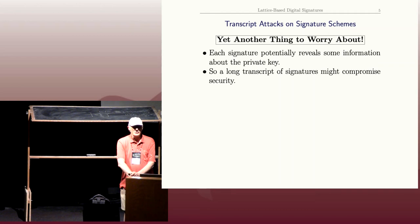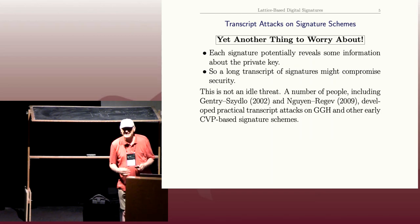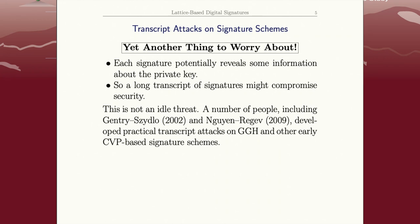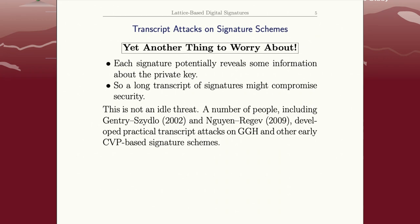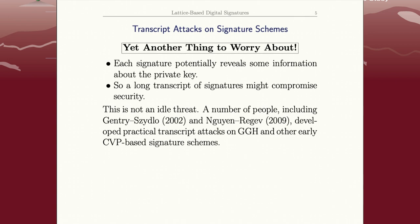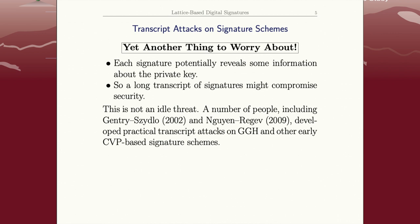The issue is a long transcript—people call it a transcript, just a list of signatures—might leak information of some sort. And this is not at all an idle threat. Gentry and Sidlow in the early 2000s, and Wynn and Regev later in the 2000s, showed that many of the lattice-based digital signature schemes that had been proposed, including at least one that I was involved with, were quite susceptible to these attacks. We kind of knew there were possibilities of these attacks and we tried to make it harder by randomizing some stuff, but they found some very clever techniques.